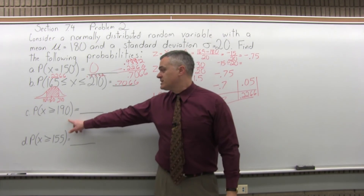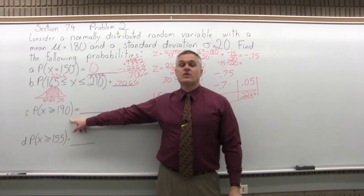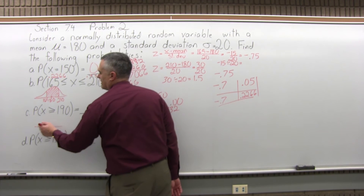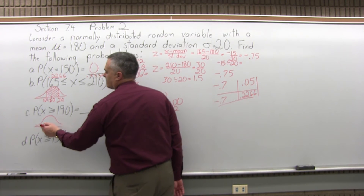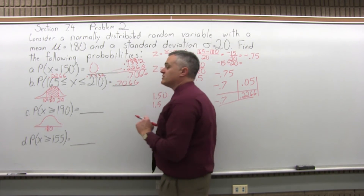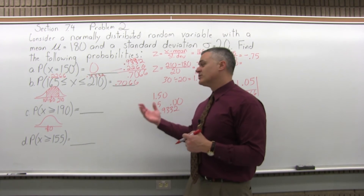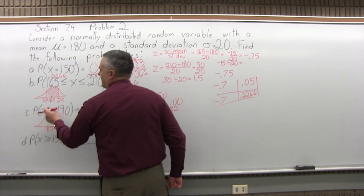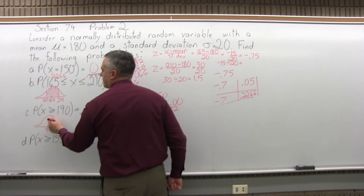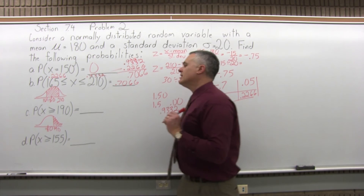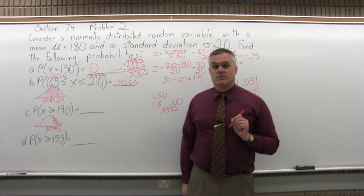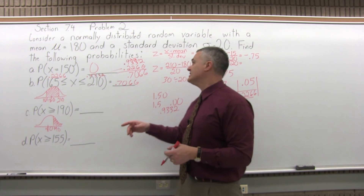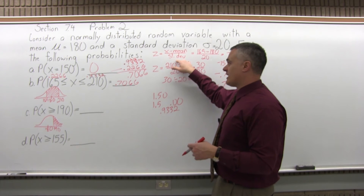Part C asks for the probability that X is greater than or equal to 190. Visually, we have a bell curve with mean 180 in the middle. Since 190 is a little larger than 180, it falls to the right, and we want the probability of being beyond that point to the right. We cannot look up 190 directly — we must convert it to a Z-score first.